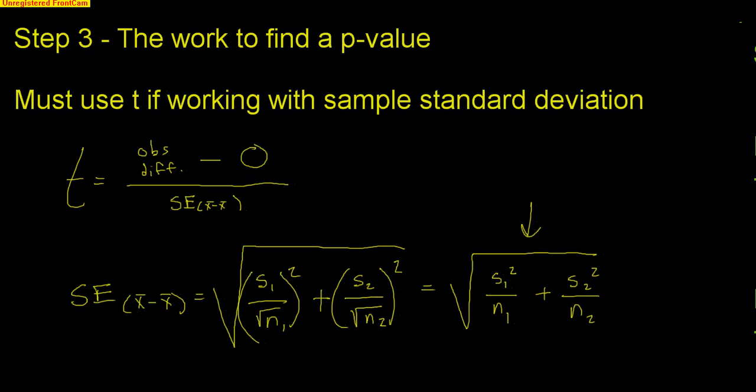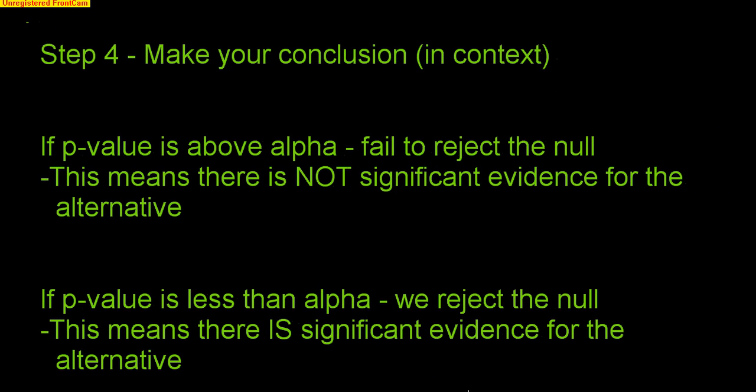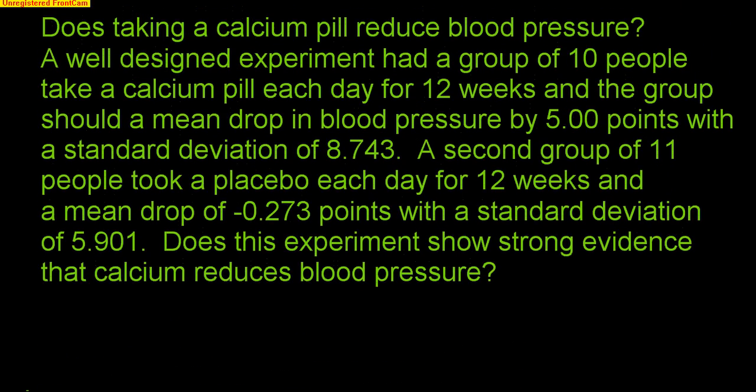Step four is making your conclusion. If the p-value is above alpha, we fail to reject the null — meaning there is not significant evidence for the alternative; the observed difference wasn't big enough to tell us anything important. If the p-value is less than alpha, we reject the null, meaning there is significant evidence for the alternative and there really is a difference between the two populations.